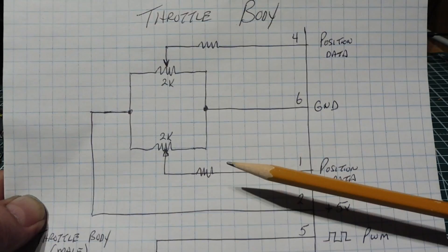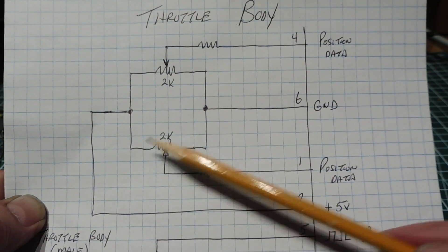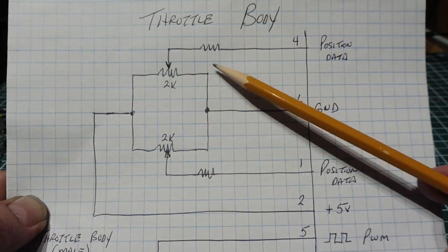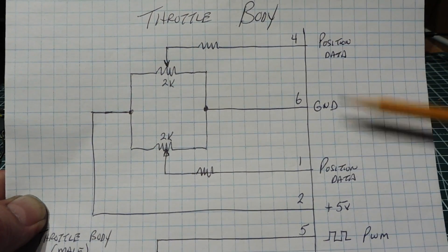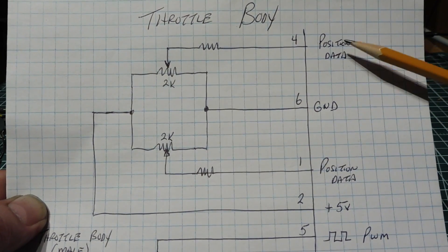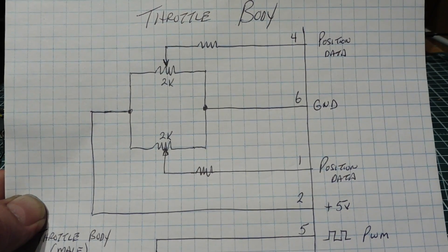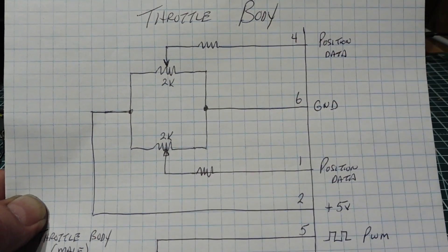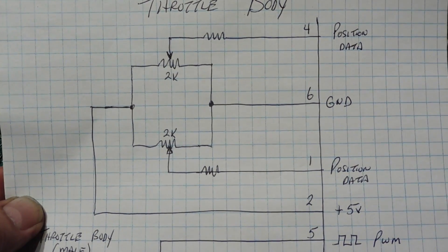These potentiometers are set up to run in opposite directions. So as we're pressing on the gas pedal, one of them will have a 0 to 5 volt output and the other will have a 5 to 0 volt output — they run in opposite directions. They do this so the voltage on both outputs will always add up to 5 volts, and they use that to check the integrity of both potentiometers. They also check the position data — the angle of the butterfly valve — to match the accelerator pedal output data. If anything is wrong, it puts the car into limp mode and gives a check engine light for safety.